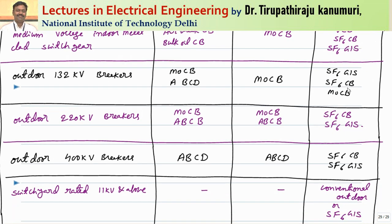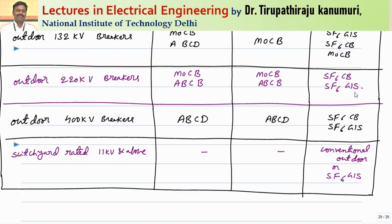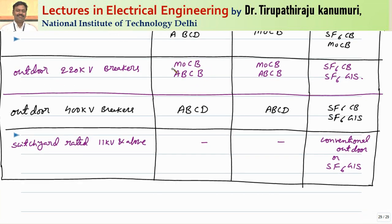For outdoor 132 kV breakers, initially minimum oil and air blast circuit breakers were used. After 1970 up to 1990, minimum oil circuit breakers were used, and after 1990 they are replaced by SF6 and minimum oil circuit breakers. For 220 kV, minimum oil or air blast were used up to the 1990s, but after that they are completely replaced by SF6 circuit breakers. For outdoor 400 kV breakers, air blast was previously used and is now replaced by SF6 circuit breakers, either simple SF6 or SF6 gas insulated substations.